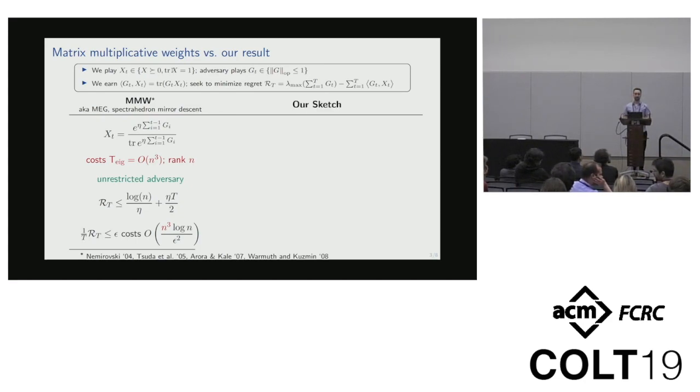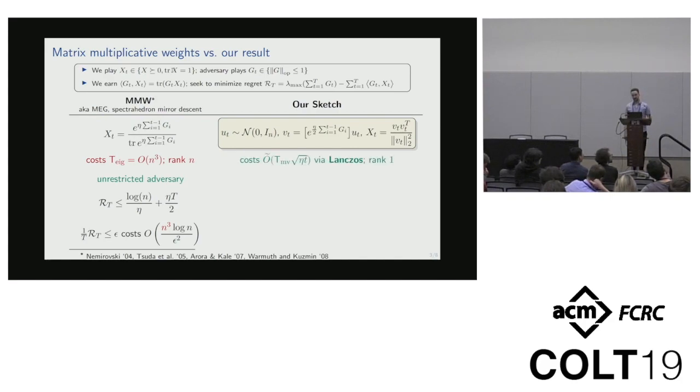Now let's describe our proposed sketch. One way to think about it is essentially a rank one JL sketch. We start by sampling a Gaussian vector UT, multiply it by the same exponential matrix for multiplicative weights, then take the rank one matrix formed by the result VT, and our action is XT. The big win is we don't have to exponentiate a full matrix anymore—just compute the product of a matrix exponential and a vector. We can do this efficiently with the Lanczos method using standard matrix vector products. This will never take much more than n squared, and can be much less if the matrix has structure. Additionally, the actions we play have rank one, which means they're much cheaper to store.